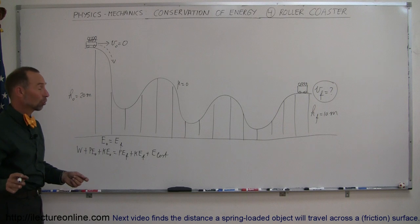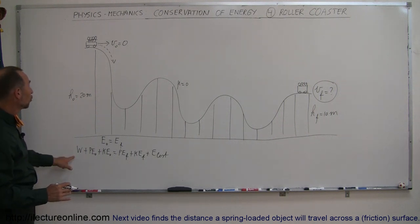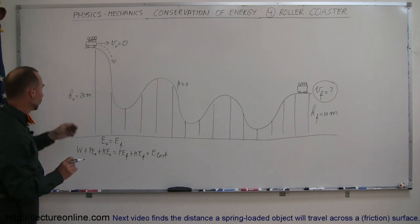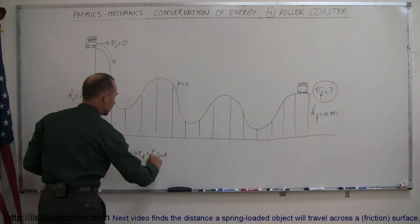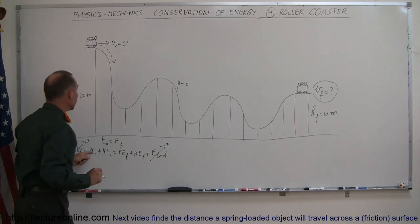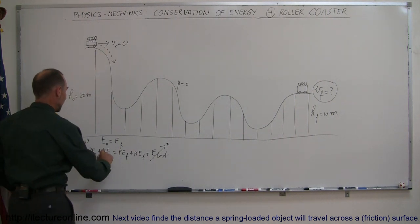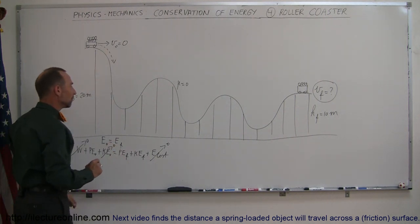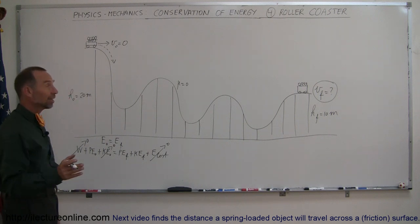And then of course right away we determine what we don't have. There's no work being put into the system, that happened before we get to the very top so we can just ignore that. No friction means no energy lost. No initial velocity means we have no initial kinetic energy.